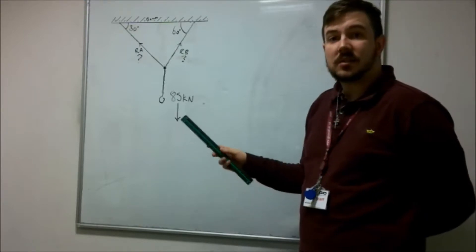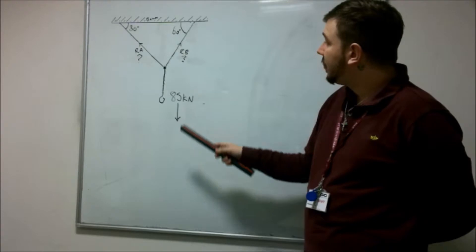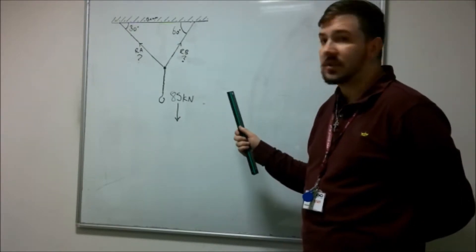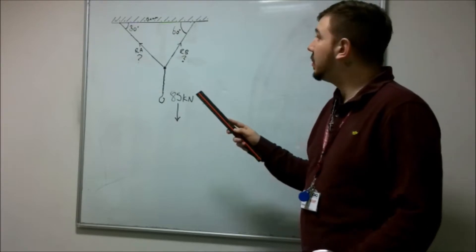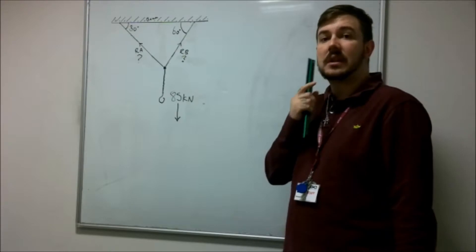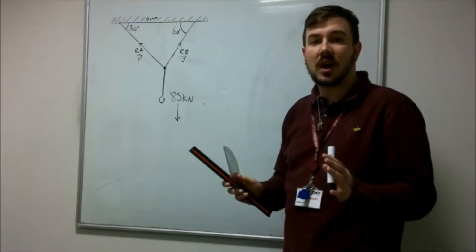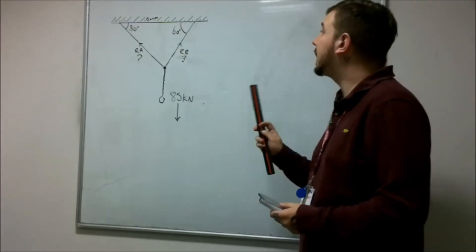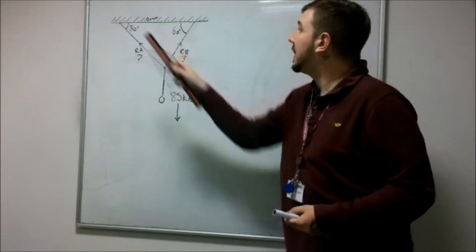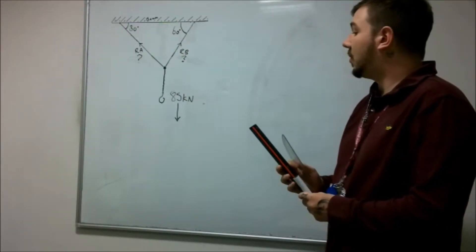In this situation we're saying there's a downward force attached to this hoist or hook of 85 kilonewtons, and what we want to do is work out the reaction forces acting upon the steel ties that are holding the chain in place, attached here and here to the concrete beam.